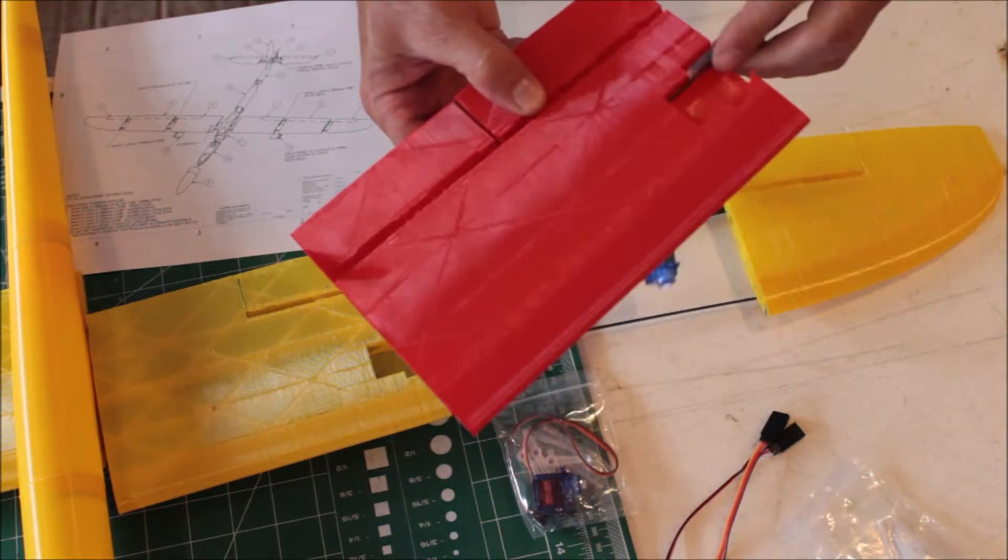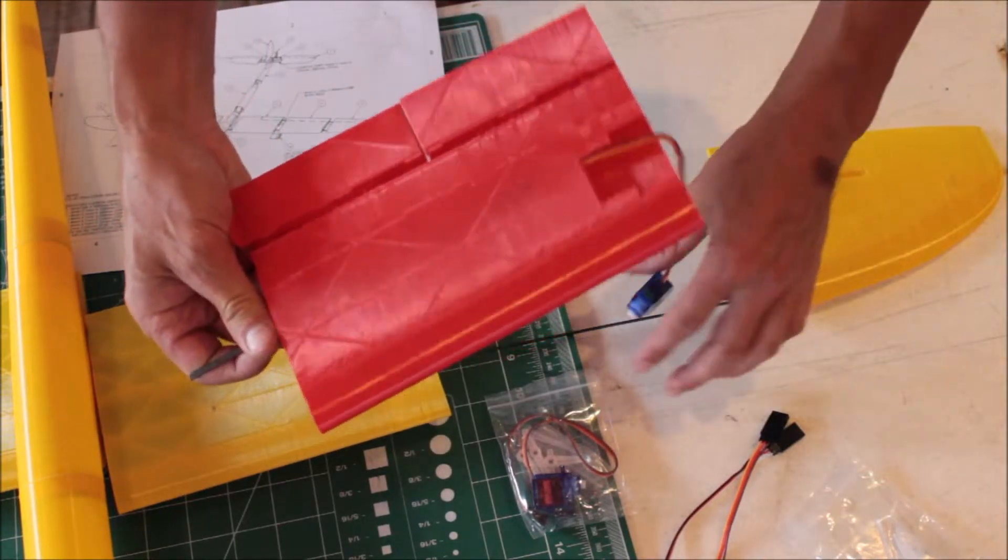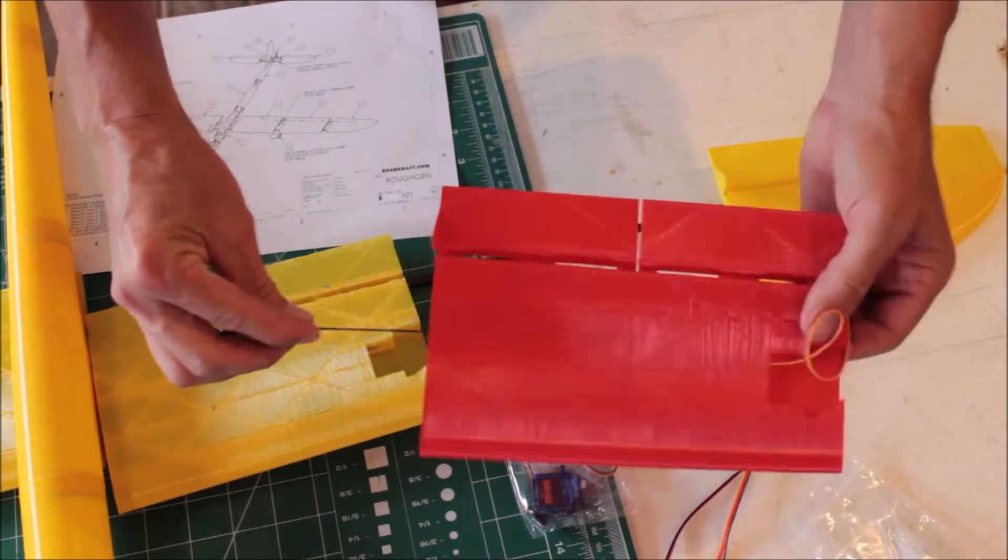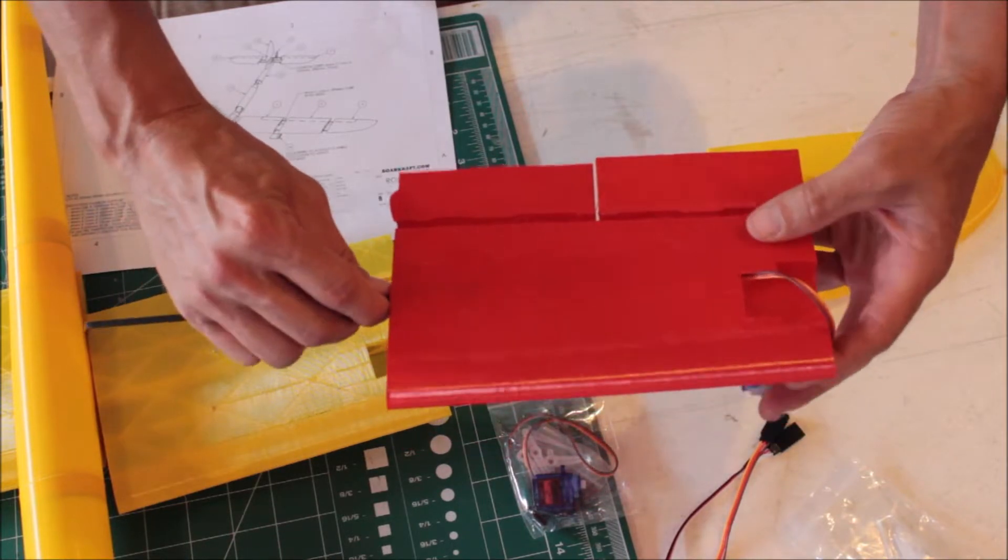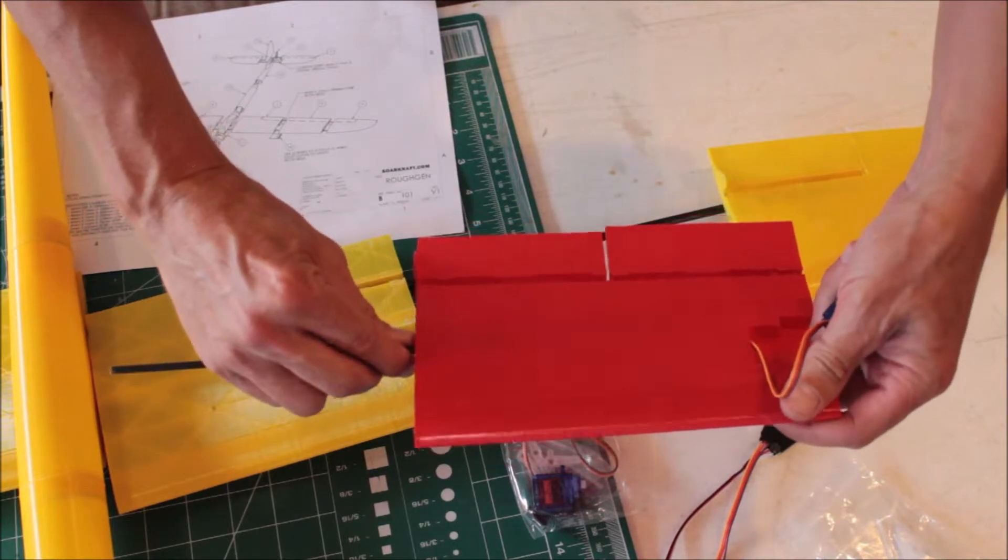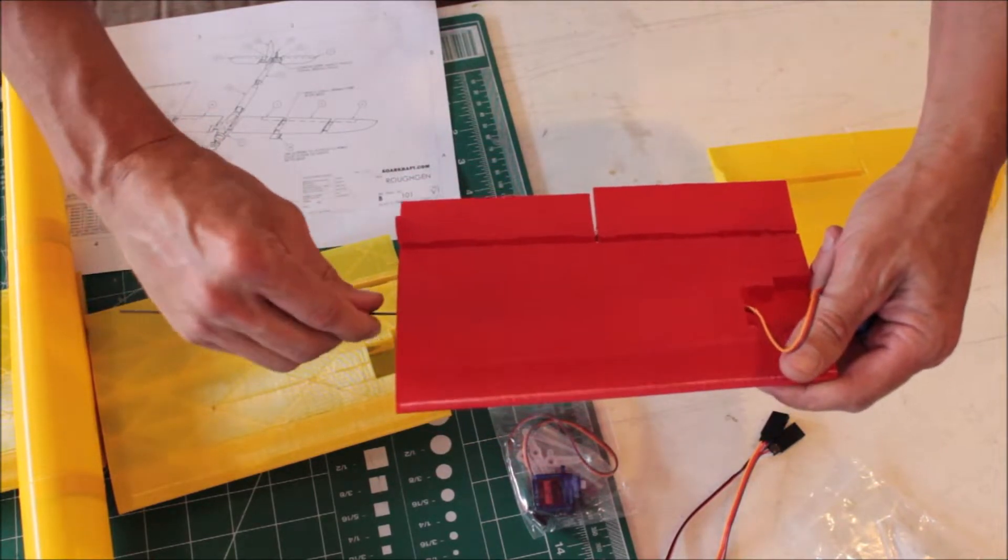This is going to be used for the aileron. Put this through and you just kind of twist and work it through, just like the other version.